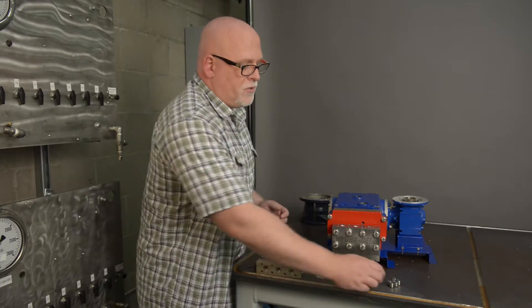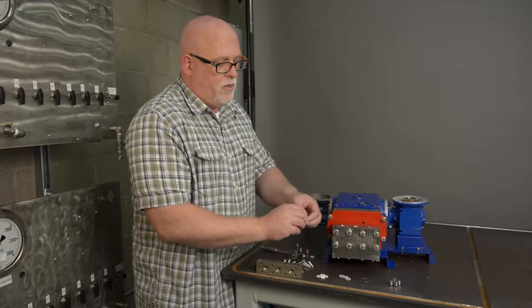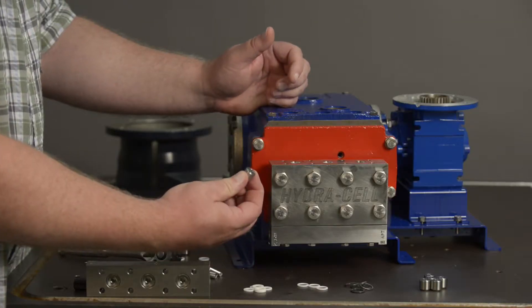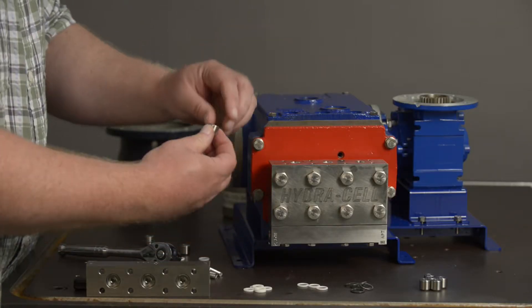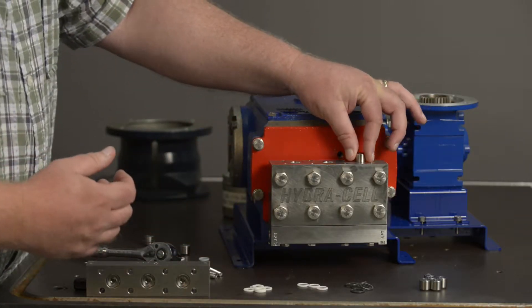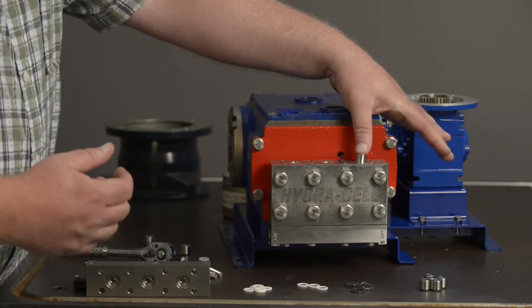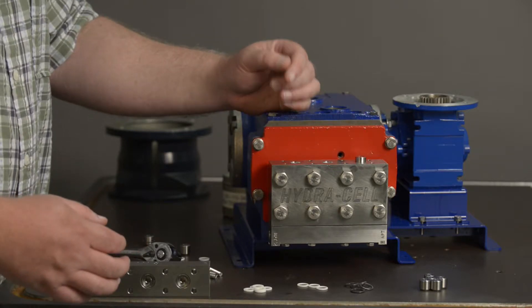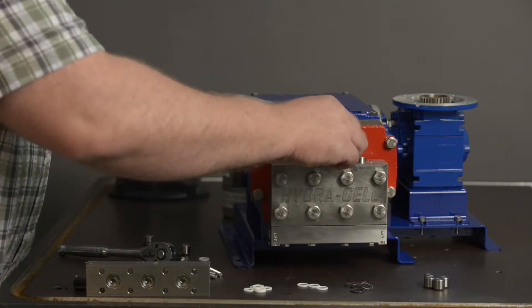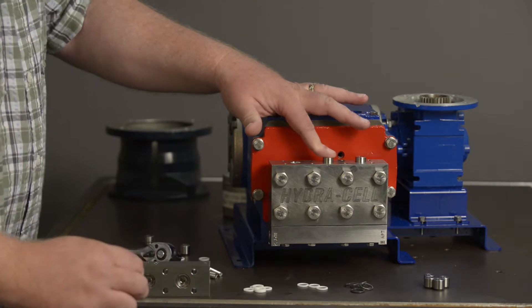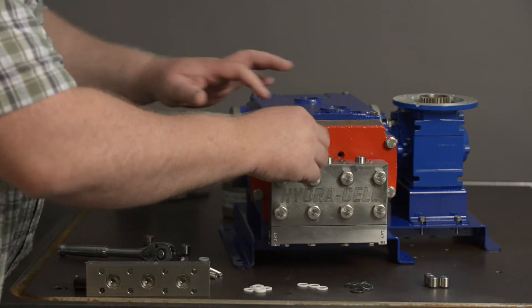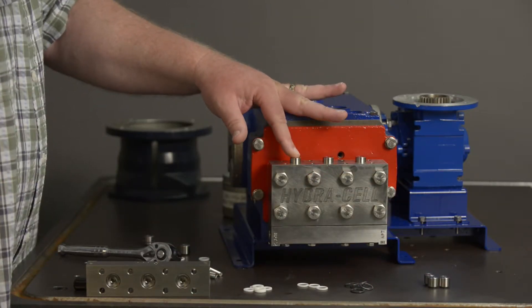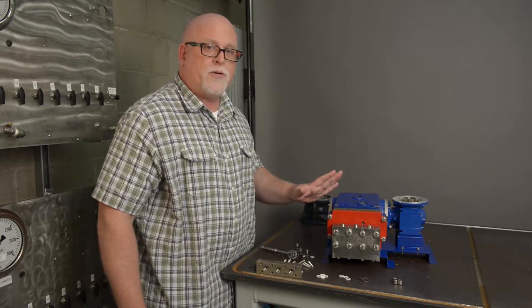The next thing that you do is you grab one of your new check valve cartridges which come pre-assembled in your kit. Set it into the opening and press down. That's it. Very easy and they seat themselves. You do that for all three of the check valves. Just like that and you're set.